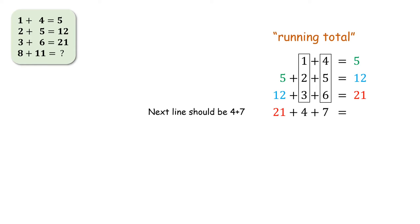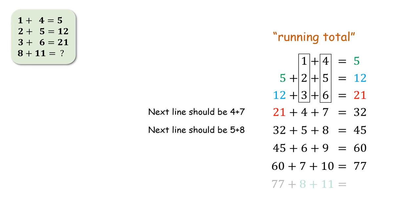By adding the previous total of 21 to this we get the total of 32. Similarly the next line should be 5 plus 8 and adding the previous total of 32 we get the total of 45. And then the next line should be 6 plus 9 and adding 45 we get 60. And the line after that should be 7 plus 10 and adding the previous total of 60 we get 77. And finally we reach the term 8 plus 11 and adding 77 to 8 we get the total of 96.